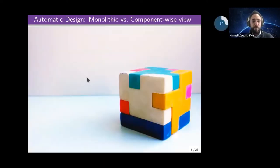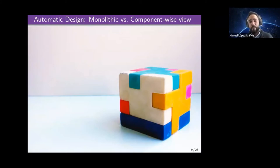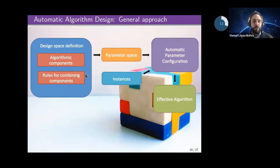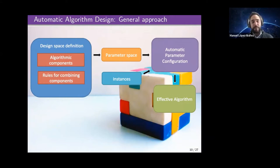But we know that inside these solvers, there are typically components that are the result of design choices, and these components could be replaced by alternative components. This is the motivation for component-wise automatic algorithm design. The idea is to open up the space, define a design space, and have a library of components, with rules that create valid designs by combining them.